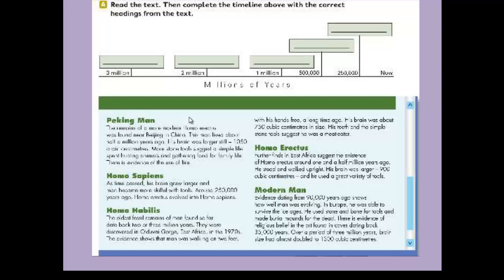Homo Erectus: Further finds in East Africa suggest the existence of Homo erectus around one and a half million years ago. His student looked upright, his brain was larger - 900 cubic centimeters - and he used a great variety of tools.